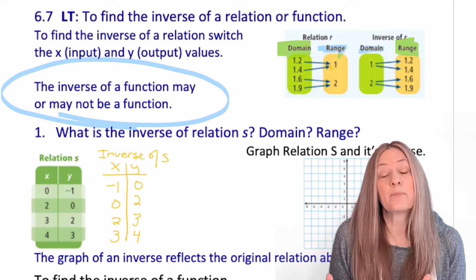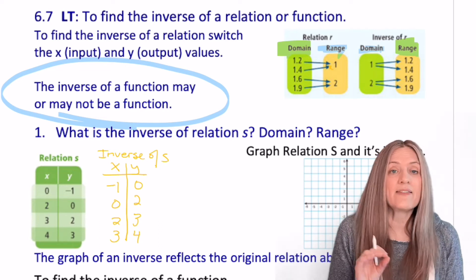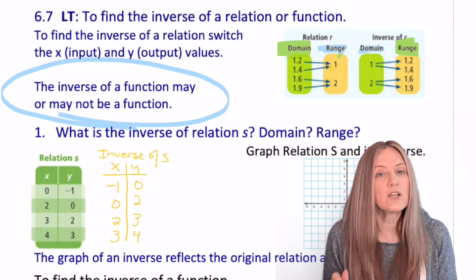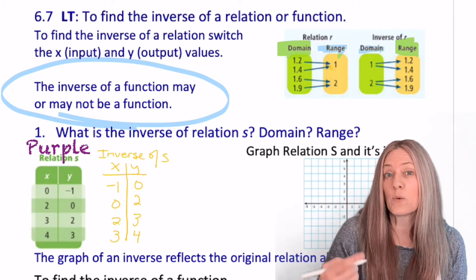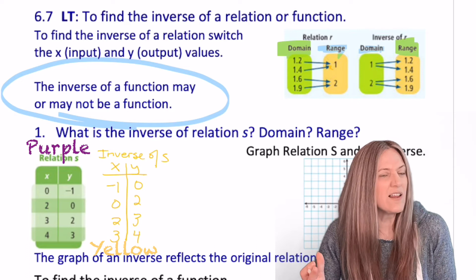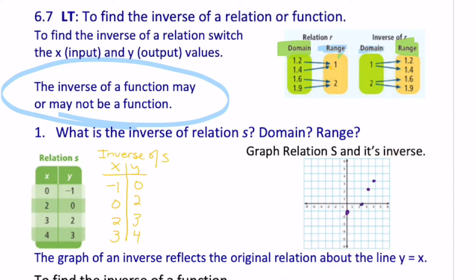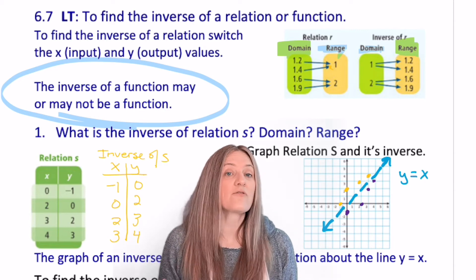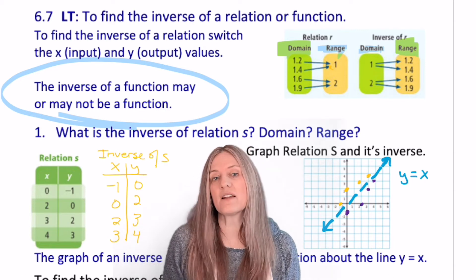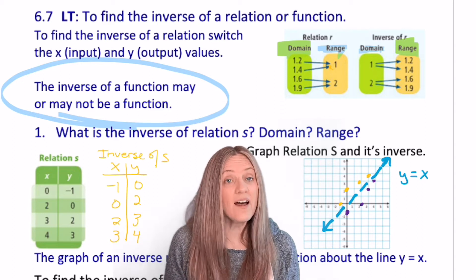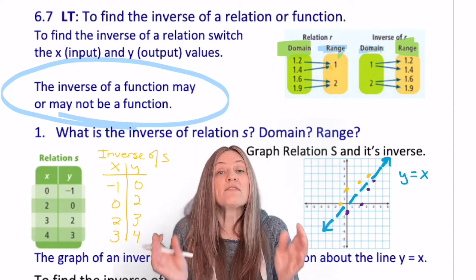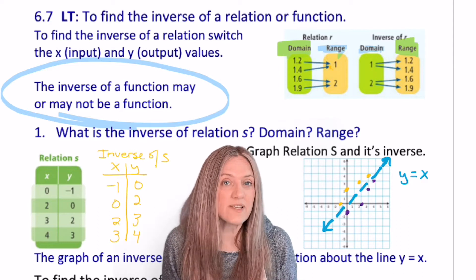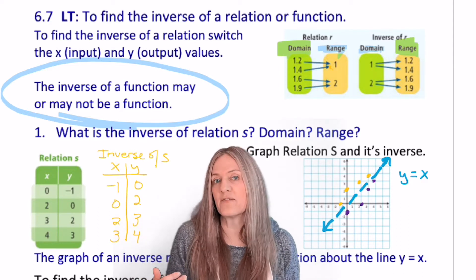Let's go ahead and plot the points from relation S, and then plot the points for the inverse using two different colors. I'm going to use purple for my original and yellow for my inverse. The points in purple are from relation S, and the points in yellow are from the inverse of relation S. I also plotted the line y equals x because a relation and its inverse reflect about the line y equals x, so it's another way we can graphically check if they're inverses.